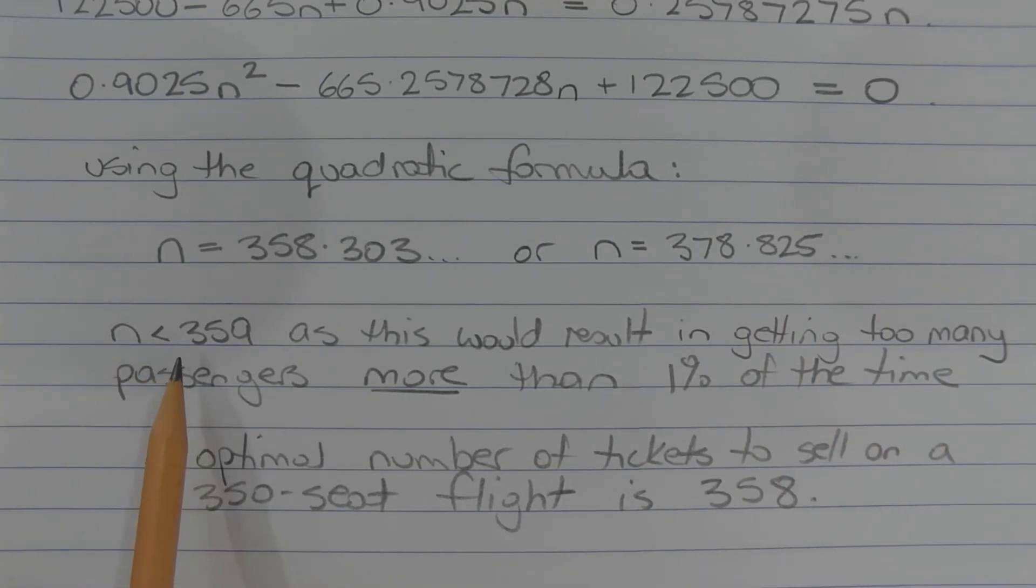N must be less than 359 as this would result in getting too many passengers more than 1% of the time. Therefore, the optimal number of tickets to sell on a 350-seat flight is 358.